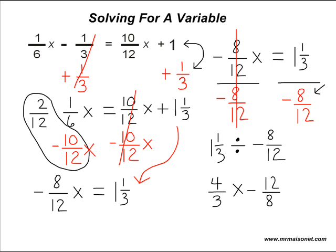Now that our problem is set up, we perform any cancellation possible to get a simplified answer. We have 4 on top and 8 on the bottom, which reduces to 1 over 2. Then 12 and 3 share a common factor of 3: 3 goes into 12 four times and into itself once, leaving 4 over 1. We further cancel the 4 and 2 to get 2 over 1. Multiplying remaining numerators gives 1 times 2 equals 2, and denominators 1 times 1 equals 1. Since one of the two terms was negative, our answer is negative 2 over 1, simplified to negative 2. Our final answer is x is equal to negative 2.